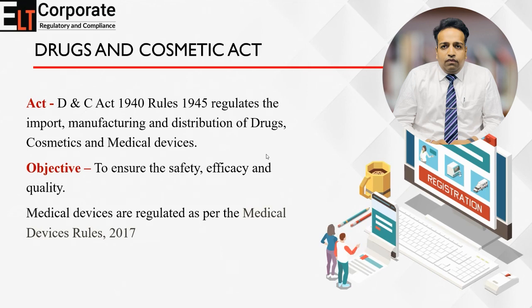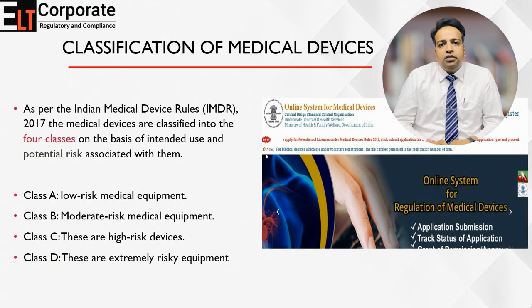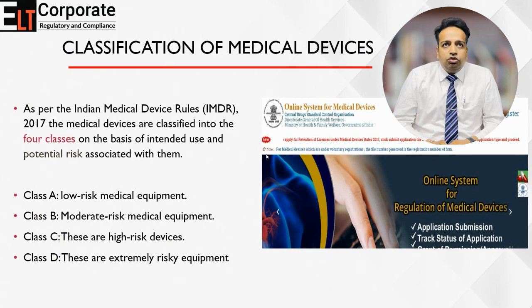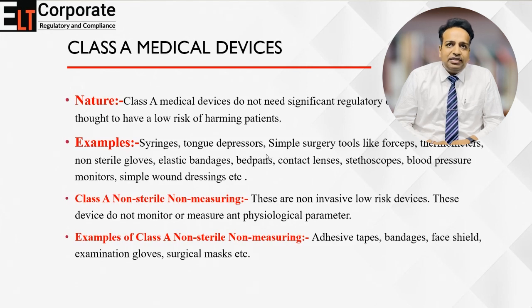While understanding the registration procedure of medical devices, it is very pertinent to understand what the classes — Class A, B, C, and D — represent. Class A medical devices are those which carry a low risk of harming patients. Classic examples of Class A medical devices include stethoscopes, simple wound dressings, surgical gowns, and simple surgical instruments.